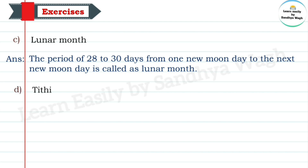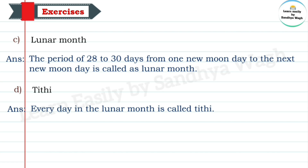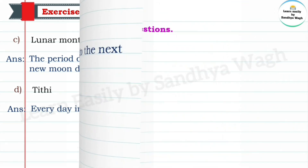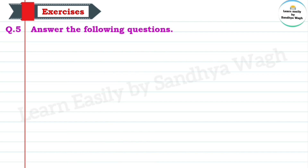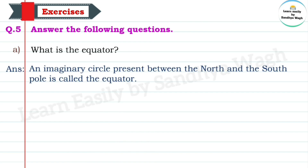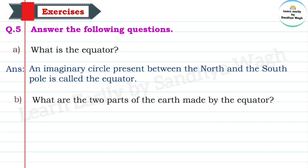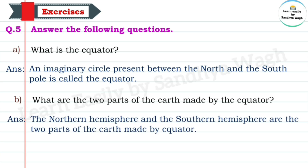D: Tithi - Every day in the lunar month is called Tithi. Question 5 - Answer the following questions. A: What is the equator? An imaginary circle present between the north and the south pole is called the equator. B: What are the two parts of the earth made by the equator? The northern hemisphere and the southern hemisphere are the two parts of the earth made by the equator.